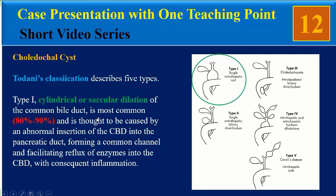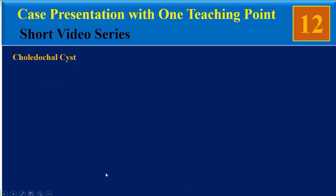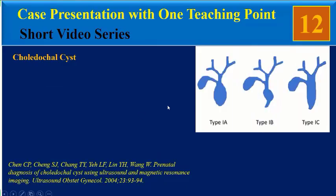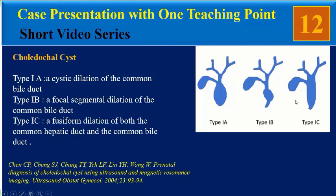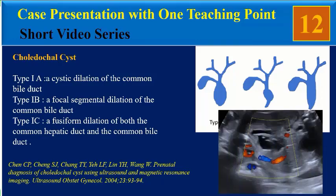Type one — cylindrical or saccular dilatation of the common bile duct — is the most common type, accounting for about 80 to 90%. It is thought to be caused by an abnormal insertion of the CBD into the pancreatic duct, forming a common channel and facilitating reflux of enzymes into the CBD with consequent inflammation. Some references divide type one into three subgroups: type 1a — cystic dilatation of the CBD; type 1b — focal dilatation of the CBD; and type 1c — fusiform dilatation of both common hepatic duct and CBD. Our patient was type 1b, meaning a focal segmental dilatation of the CBD.